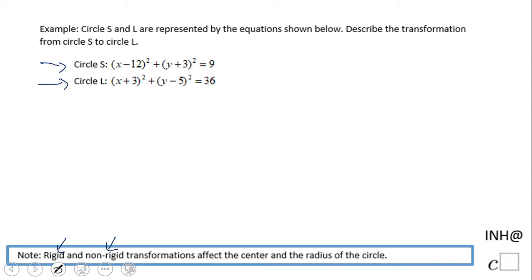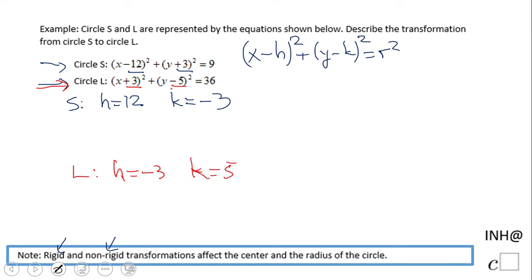For that reason you're going to need this form: (x - h)² + (y - k)² = r². Let's take a look at circle S. We have (x - 12)², so that means h is 12. And we have (y + 3), that means k is negative 3 when you flip it. We're going to do the same thing for circle L. If you look, (x + 3) means h is negative 3. (y - 5) means k equals 5.